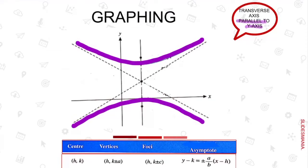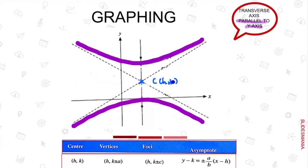Let's see the usual points we will identify first, which is your center. In the middle here, this is your center with a coordinate of h, k. The center is placed on the transverse axis, and you can see that the transverse axis here is parallel to your y-axis. Since this line is your transverse axis, therefore the perpendicular line to it is your conjugate axis.